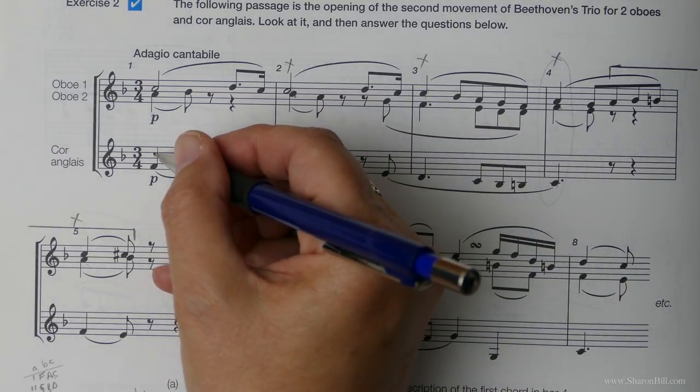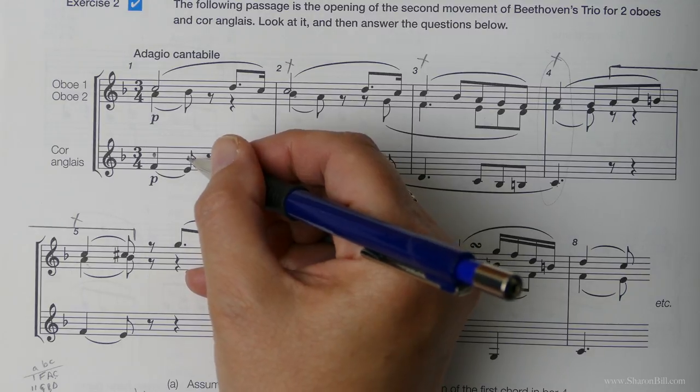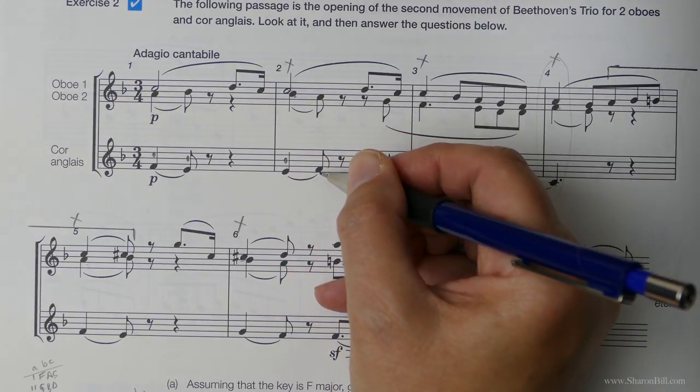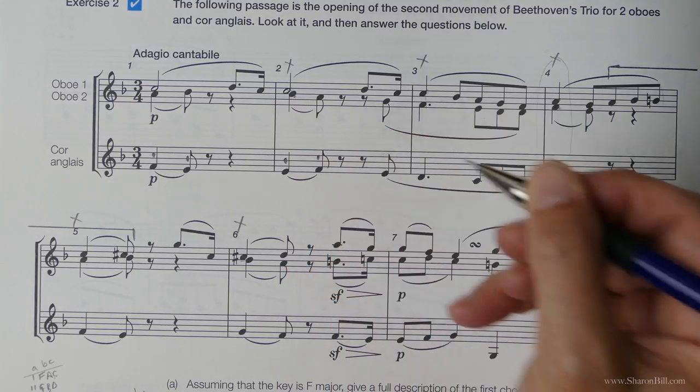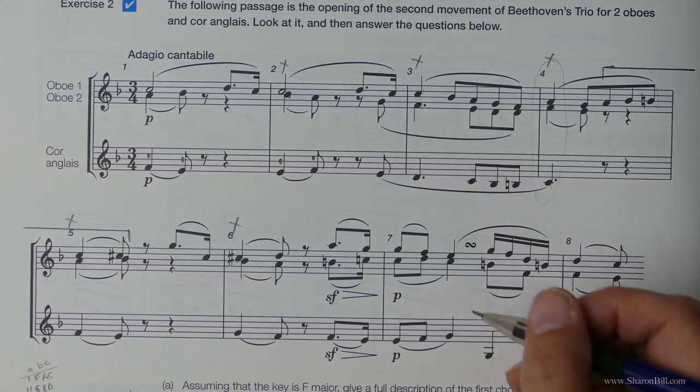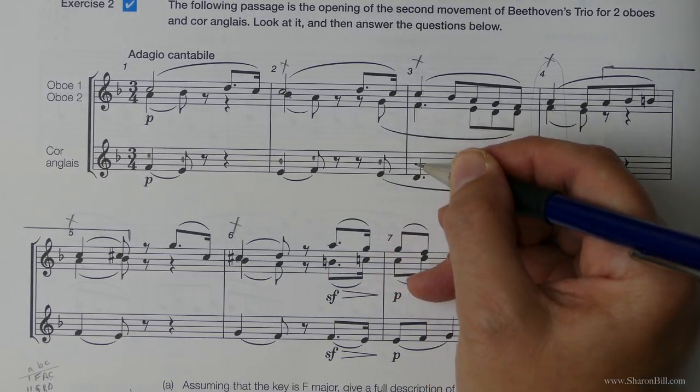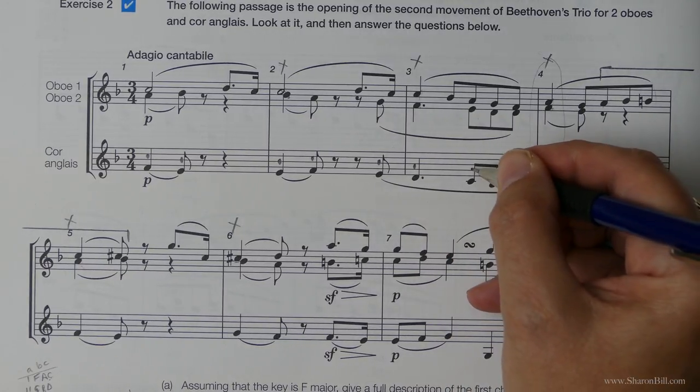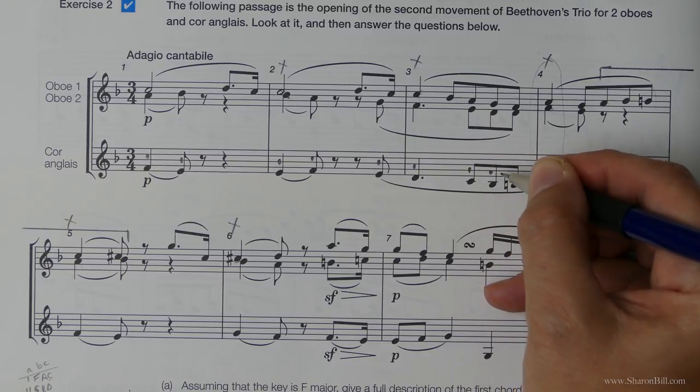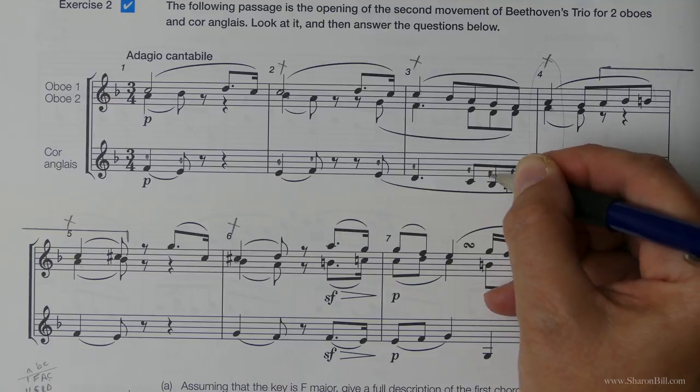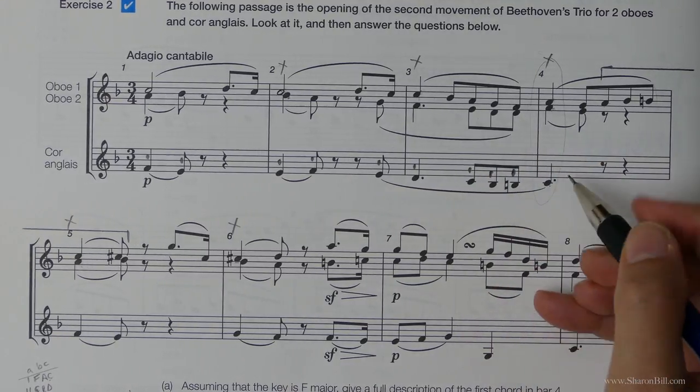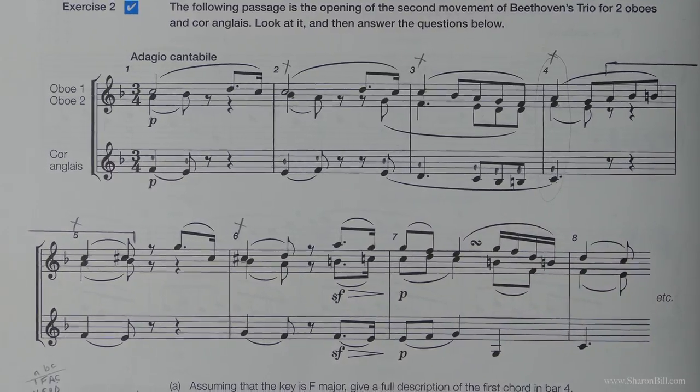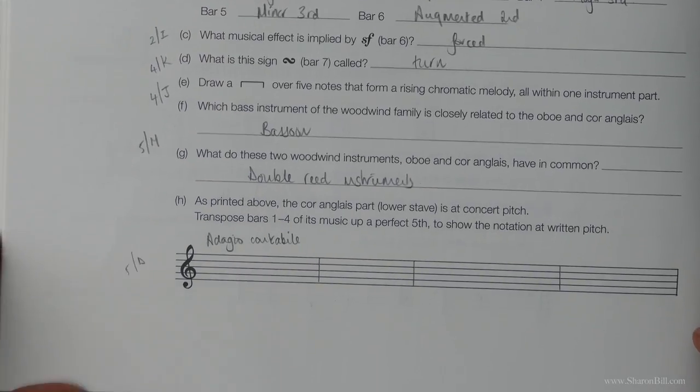And then if everything's going to go up a fifth I'm just going to sketch in above what that's going to be. One, three, five takes us to C. Down a step B. B again. F, A, C. And we're going down a step. Down a step takes us to A. C, E, G, there we go. Down a step. Same note we're going to have to think about the accidentals there. And then one, three, five takes us to G. So I'm just going to write those note heads in now down here.